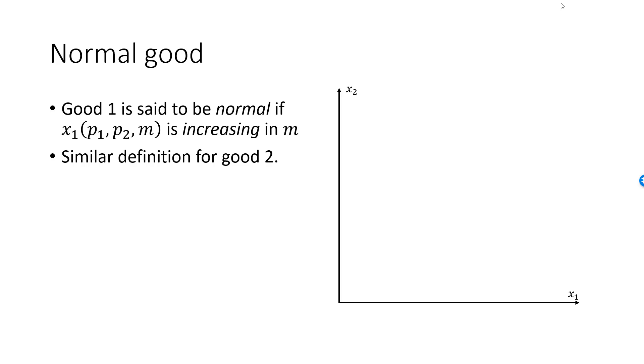Here is a picture illustrating the case when both goods are normal. The graph shows the optimal bundle for a consumer with given prices and a given income. If her income increases, the budget line shifts outwards. The slope is the same since there is no change in prices.